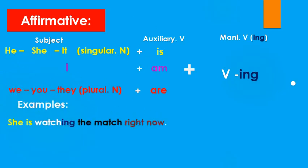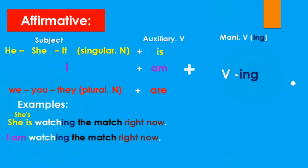Here we have examples. 'She is watching the match right now.' We can contract 'she is' to 'she's' — 'She's watching the match right now.' Another one: 'I am watching the match right now.' We can contract it to 'I'm' — 'I'm watching the match.'